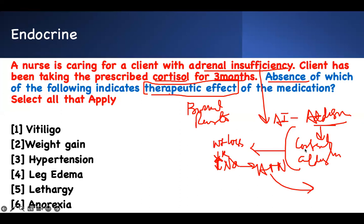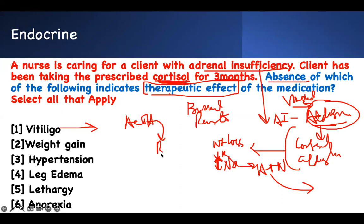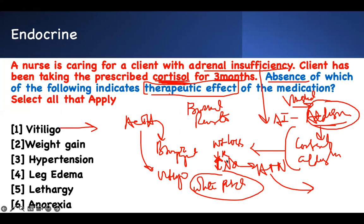Now look at the question — you're looking for things related to Addison's, and if you give them the steroid, those will vanish. You should not see signs and symptoms related to Addison's because you're treating them with cortisol. When you have Addison's, your ACTH is high, which can lead to bronze pigmentation, and patients can also develop vitiligo. If I give you cortisol, your ACTH will decrease and prevent this pathway. Therefore, absence of vitiligo indicates the cortisol is working.